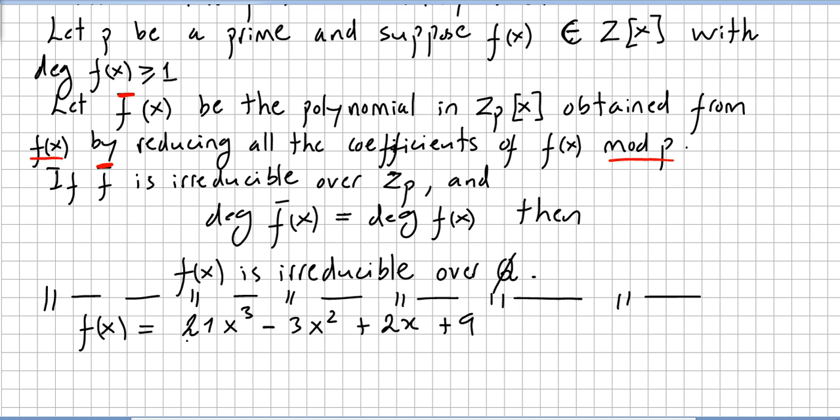Let's check one example. So we pick f(x) = 21x³ - 3x² + 2x + 9. So we have f(x) in the ring of integers. So far so good. The degree of f(x) is greater than 1. Yes, it is.